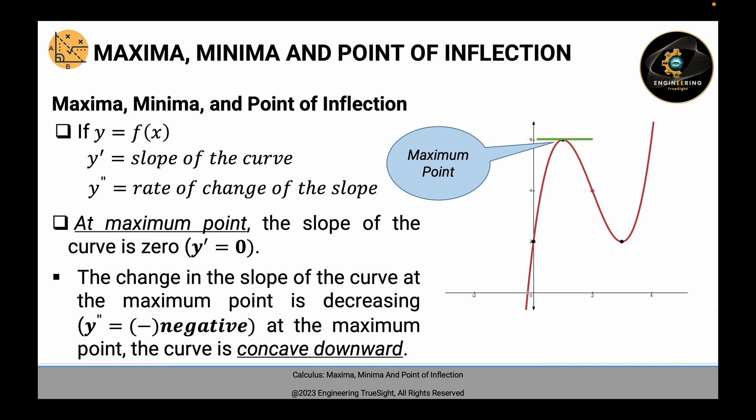At a given maximum point, the slope of the curve is 0 — that is, y prime equals 0, as we can see in the figure. The change in the slope of the curve at the maximum point is decreasing; that is, y double prime is a negative value. At the maximum point, the curve is concaved downward.